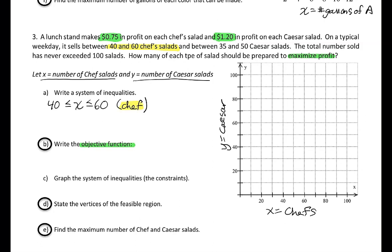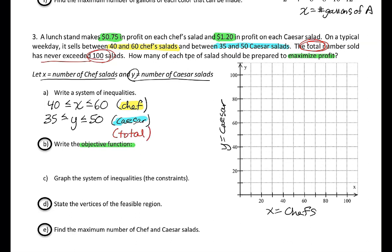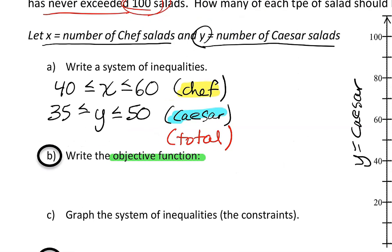The other information: we have between 35 and 50 Caesar salads. Caesar salad is y, so y has to be between 35 and 50. That's our Caesar information. Lastly, the total number of salads has never exceeded 100, so we need a total constraint: x + y ≤ 100.